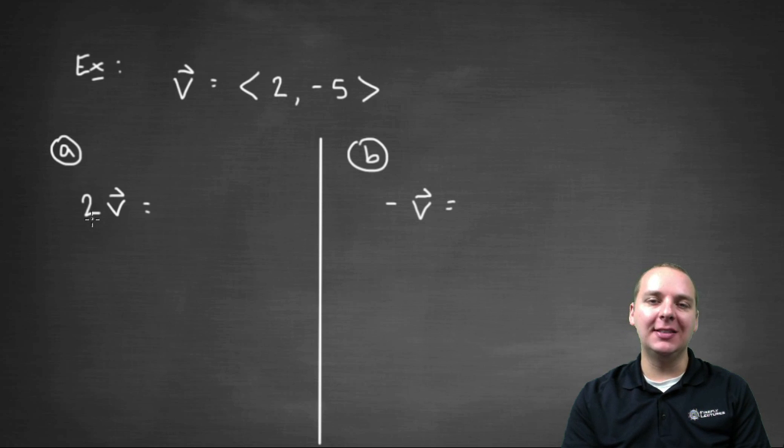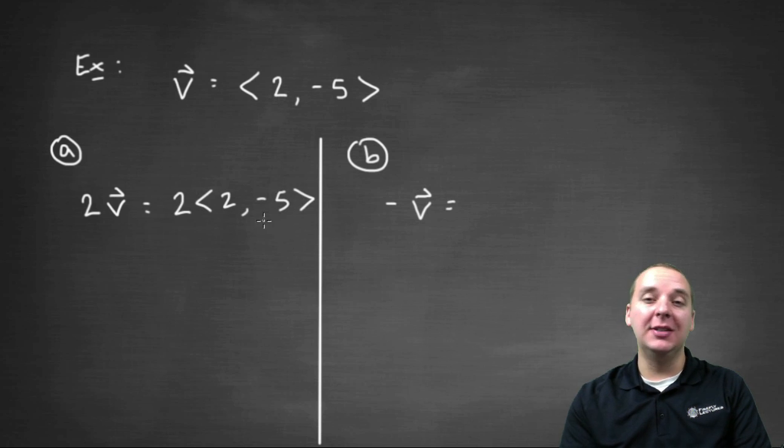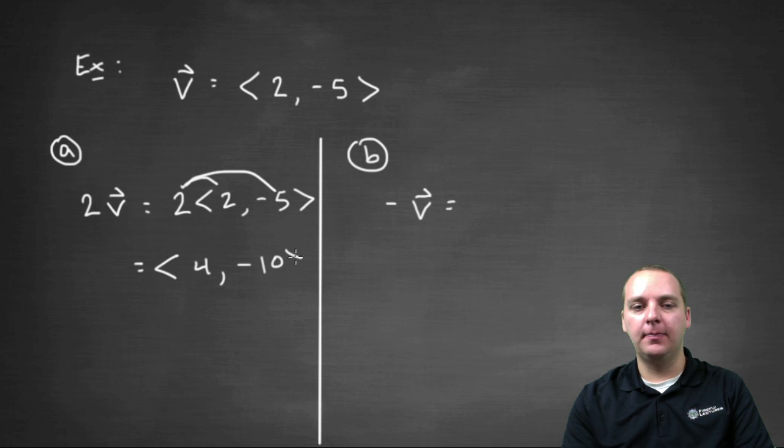Let's say we wanted the scalar multiple two times vector v. So that would be two times the vector two comma negative five. And with scalar multiplication all you do is you distribute the scalar through. So this answer would be four comma negative ten.